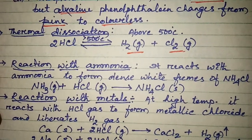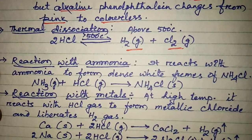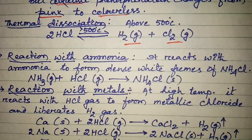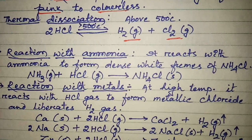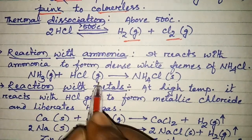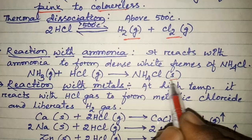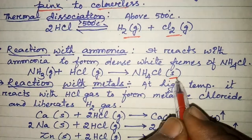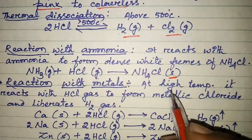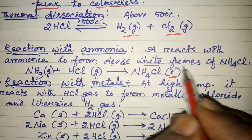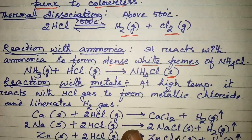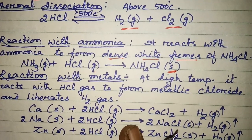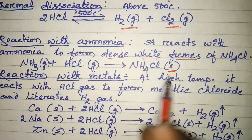Now we will discuss the reaction with ammonia. HCl reacts with ammonia to form dense white fumes of ammonium chloride. The equation: ammonia gas plus HCl gas produces ammonium chloride as a solid. These two gases, when mixed, form a solid — the dense white fumes you observe during experiments are fine, minute crystalline solids of ammonium chloride.